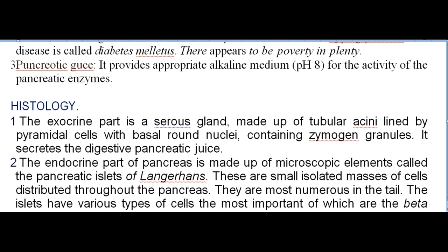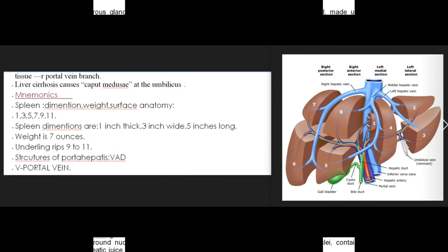Sometimes a right hemi-liver comprising segments V to VIII can be removed from a healthy donor and transplanted into the needy patient. Transjugular intrahepatic portosystemic shunt (TIPS) for portal hypertension: balloon catheters are introduced from the internal jugular vein through the superior vena cava, inferior vena cava, hepatic veins, liver tissue, and portal vein branches. Liver cirrhosis causes caput medusae at the umbilicus.